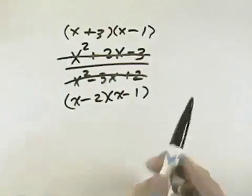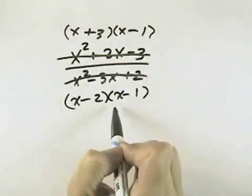So that would be the factored form for the denominator. Now we have 2 factors in the numerator, 2 factors in the denominator.